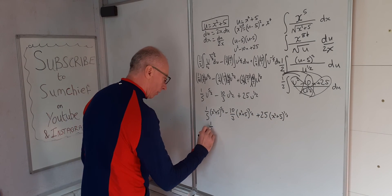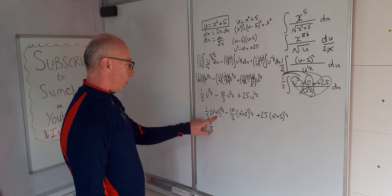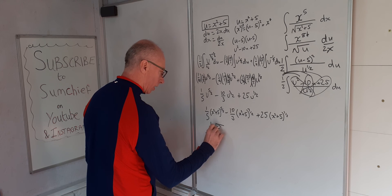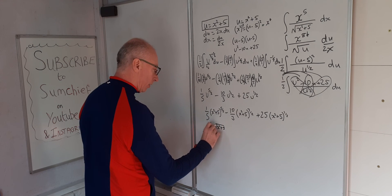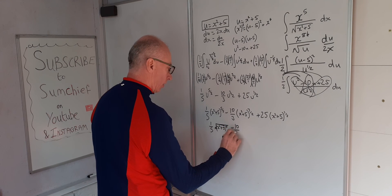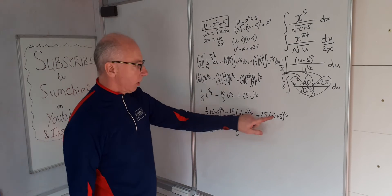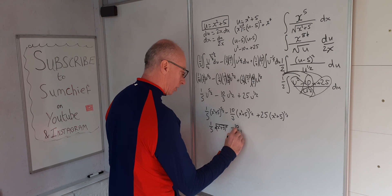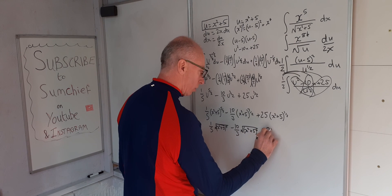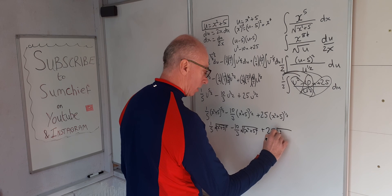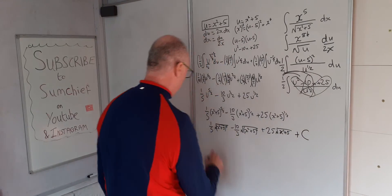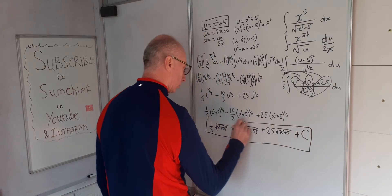Substituting back: one fifth times (x squared plus 5) to the five over two — since there's a 2 on the bottom that's the square root of (x squared plus 5), raised to the power of 5. Minus ten over three times the square root of (x squared plus 5) cubed. Plus 25 times the square root of (x squared plus 5) to the power of 1, which stays the same. Plus C.